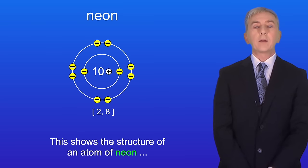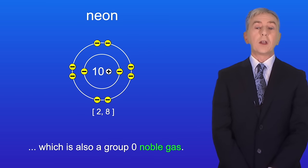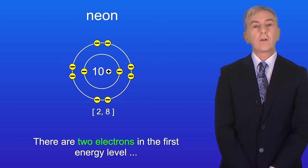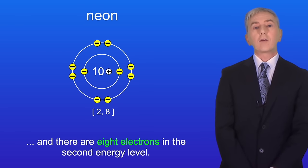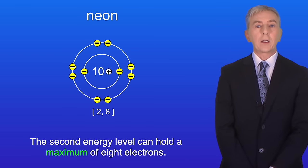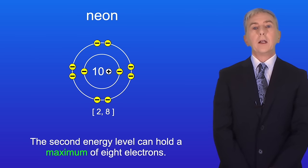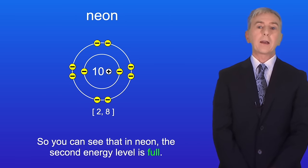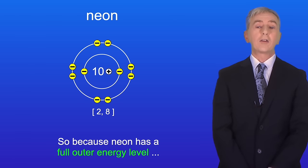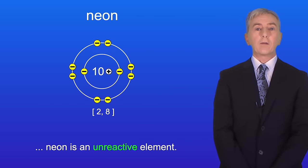This shows the structure of an atom of neon which is also a group zero noble gas. Neon has 10 electrons. There are two electrons in the first energy level and there are eight electrons in the second energy level. Now the second energy level can hold a maximum of eight electrons. So you can see that in neon the second energy level is full. So because neon has a full outer energy level, neon is an unreactive element.